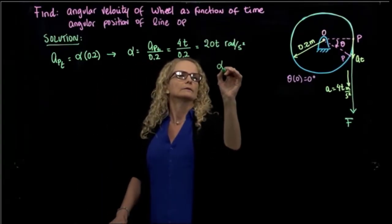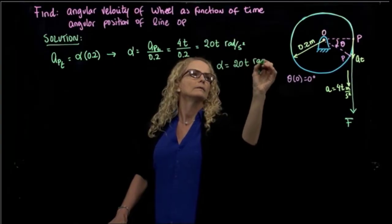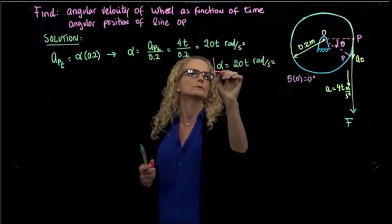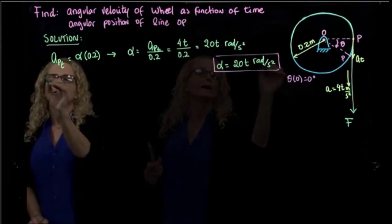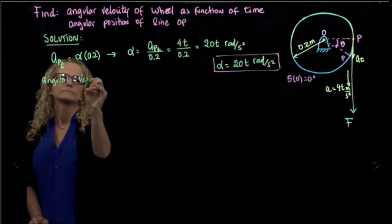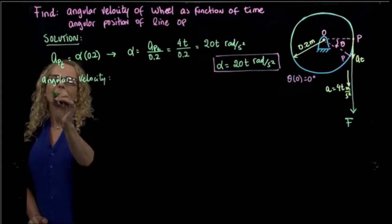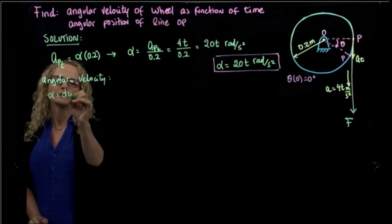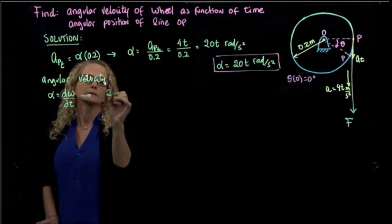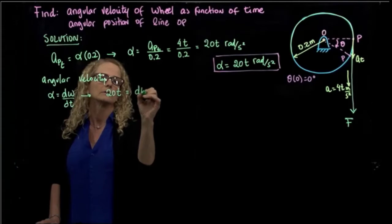So we found the angular acceleration: α = 20T radians per second squared. That's the first result. Now we find the angular velocity. We know that angular acceleration is the derivative of angular velocity with respect to time, so we can write 20T = dω/dt.